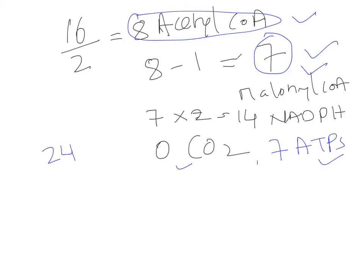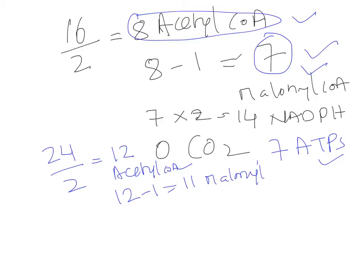Now applying this to 24-carbon lignoceric acid: 24 ÷ 2 = 12 total acetyl-CoAs consumed. Then 12 − 1 = 11, meaning 11 malonyl-CoAs enter the fatty acid synthase complex and 1 acetyl-CoA enters directly. This also means 11 cycles (spirals) take place.